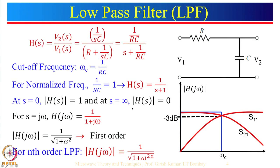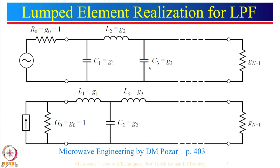Then we had seen a simple example of an RC filter, and I did mention that we do not use RC filters at microwave frequency because the resistor gives additional losses. So instead of using RC filters, we in general use inductors and capacitors. One can start with a capacitor and then go to inductor, or one can start with the inductor and then go to the capacitor.